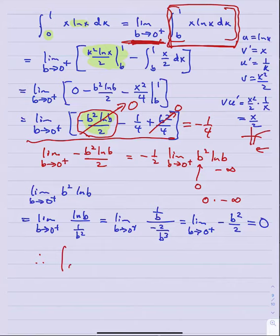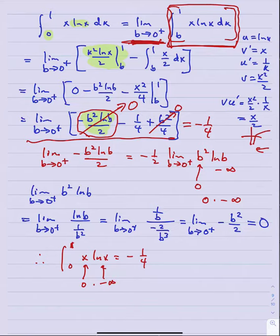Therefore the entire limit is -1/4. So the integral from 0 to 1 of x·ln(x) dx = -1/4. This is a convergent improper integral. As x → 0, x → 0 but ln(x) → -∞; their product has a strange mix, and the area over 0 to 1 turns out to be the finite value -1/4, with the negative function dominating but not producing an infinite result.